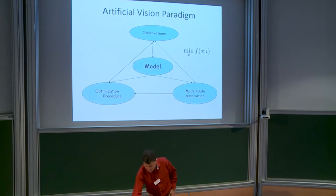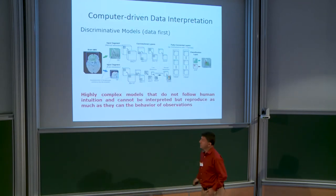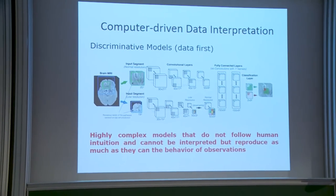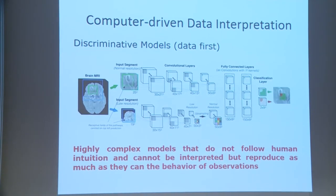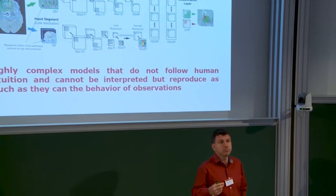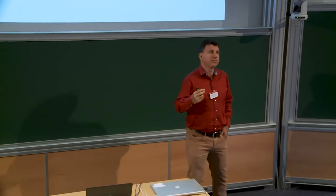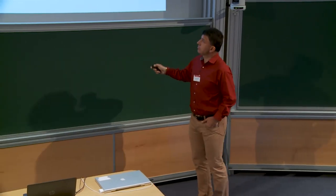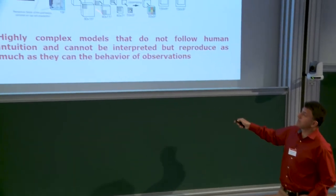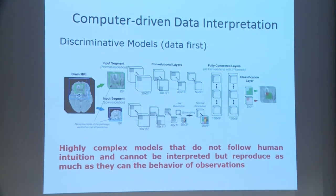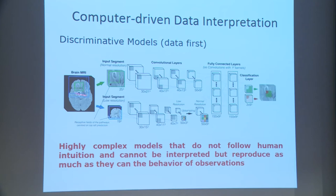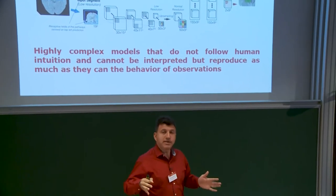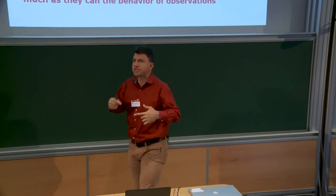Looking at current trends in machine learning and data science, there are two different approaches. The first is data-driven methods — these do not assume a model. The objective is not to interpret data through a model, but to reproduce the behavior of the data. Given annotated data, you define a black-box strategy applying a number of operators such that after passing observations through a network, you reproduce the data's behavior.